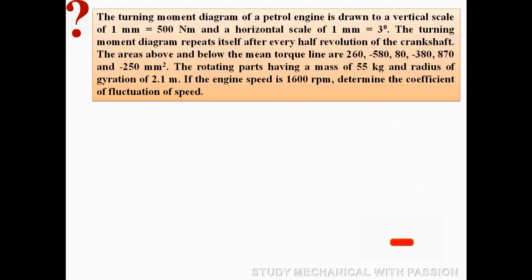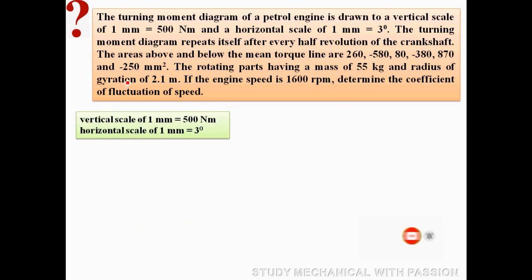A turning moment diagram of a petrol engine is drawn with a vertical scale of 1 mm = some torque value (Nm) and a horizontal scale where 1 mm represents a certain angle in degrees. The y-axis is torque and the x-axis is crank angle theta.